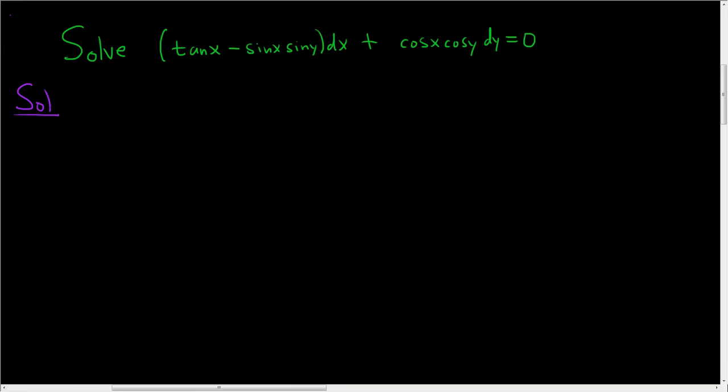So recall when you're checking to see if something is exact, this piece here, this is your big M, and this piece here is your big N.